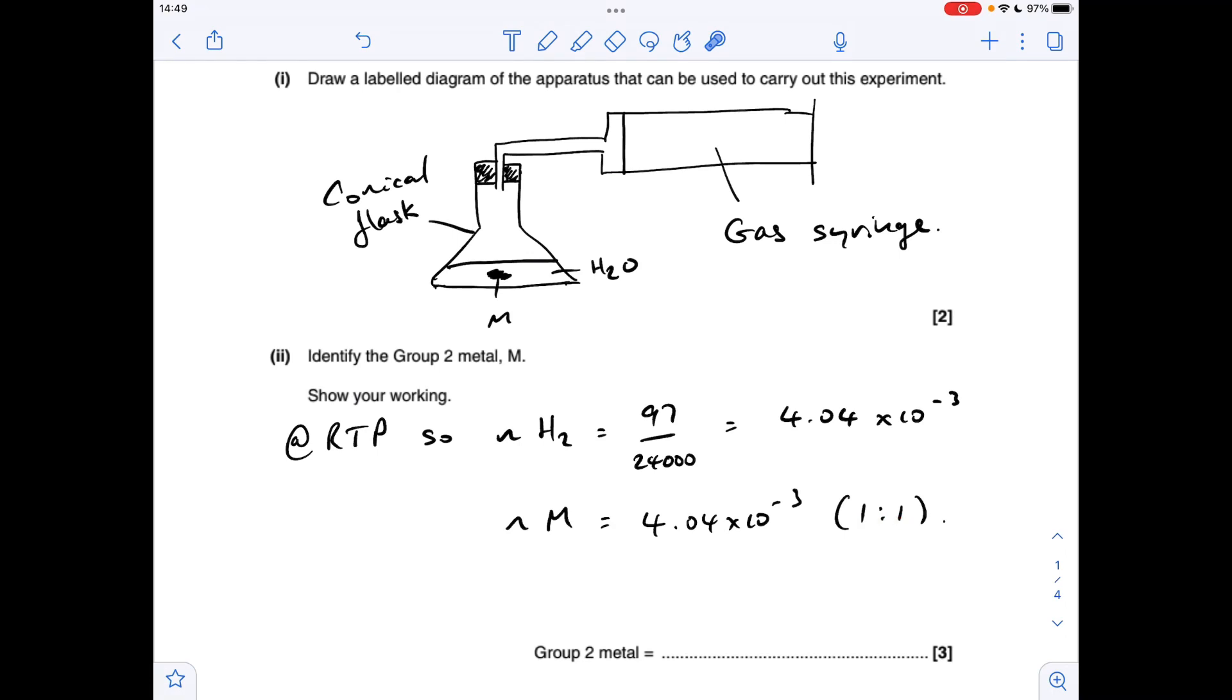One to one ratio in the reaction, so we've got the same number of moles of metal M. So the MR of M equals mass over moles, 40.08, or you could put 40.1 there. And we're told it's in group two, so it's obviously calcium.